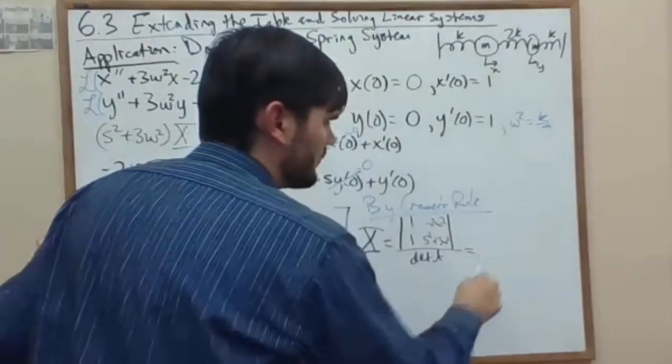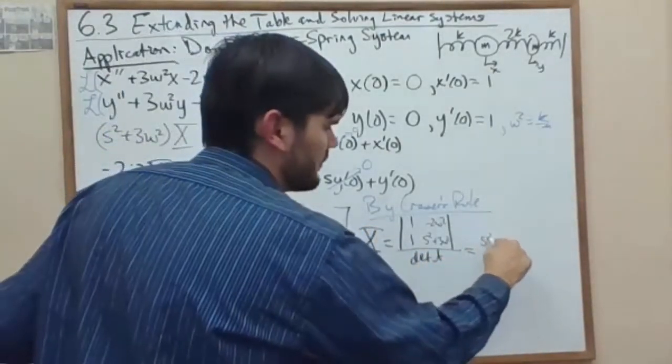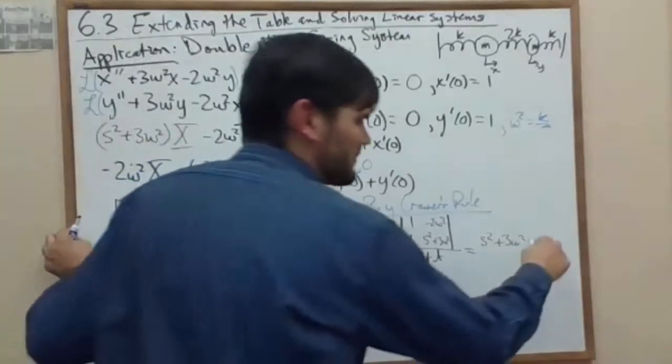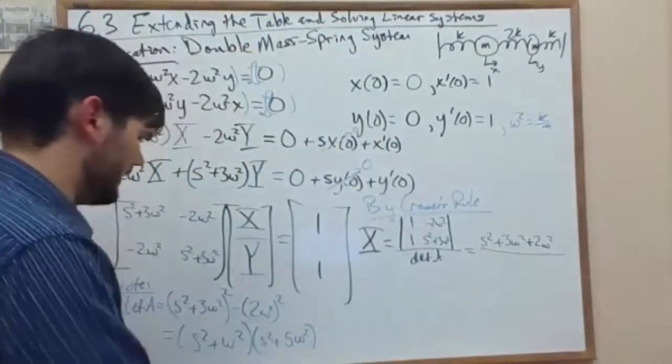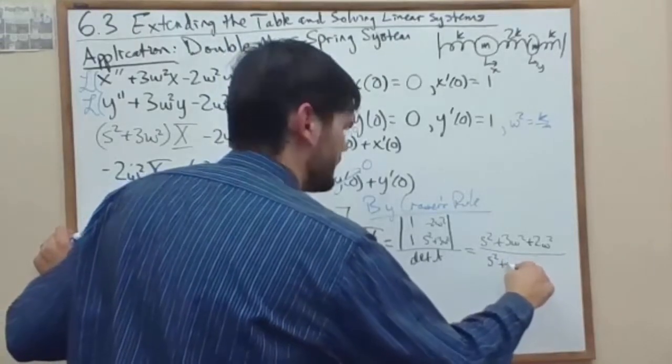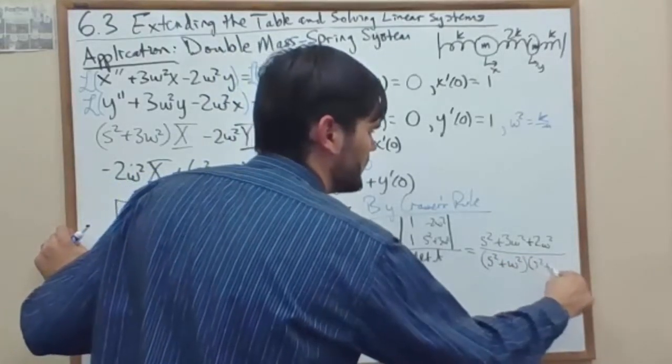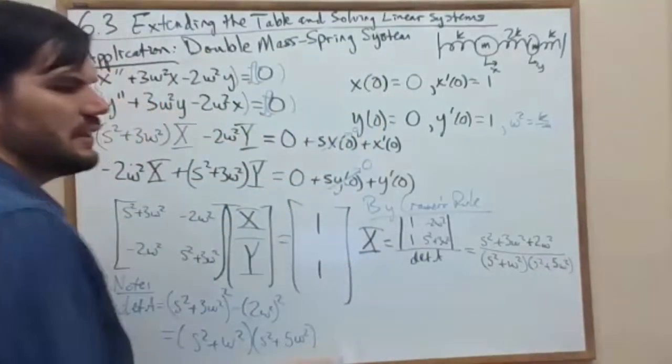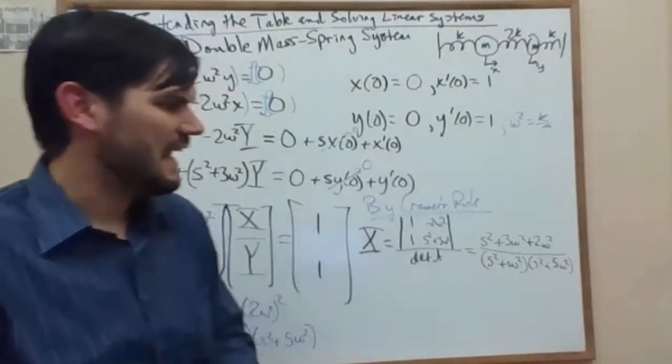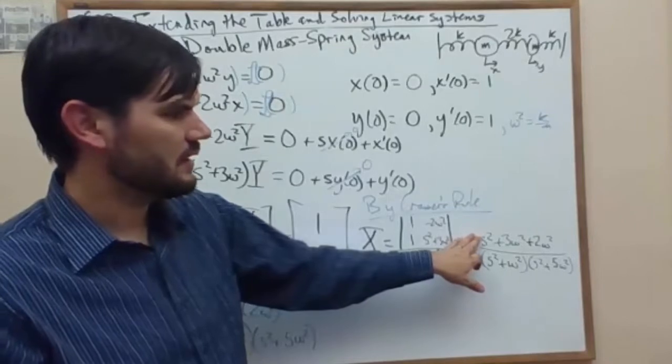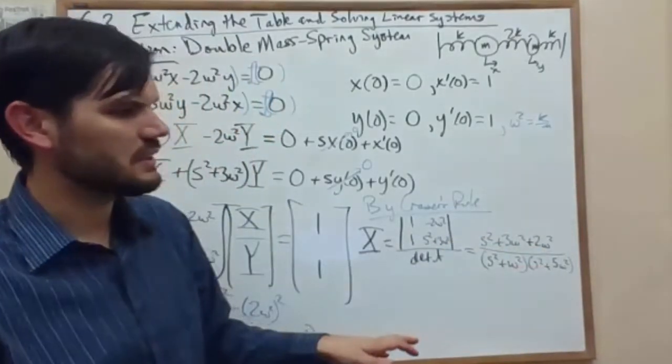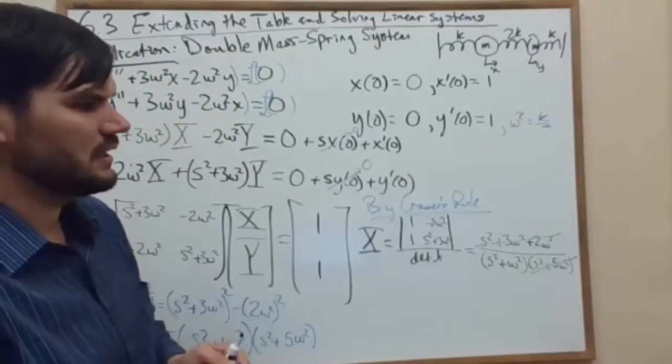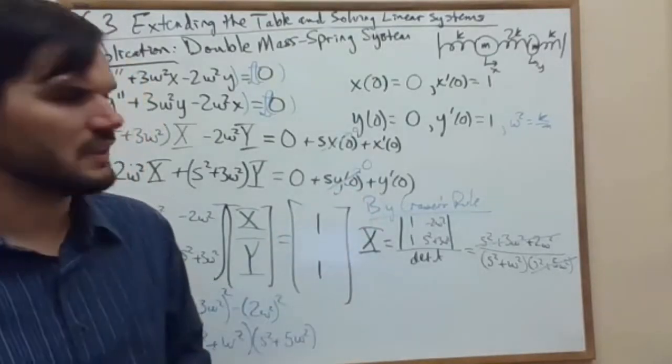So let's write that down. We'll get an s squared plus 3 omega squared minus a negative 2 omega squared plus 2 omega squared, all divided by s squared plus omega squared times s squared plus 5 omega squared. Now looking at these two pieces, we have an s squared plus 5 omega squared on top, which cancels directly with s squared plus 5 omega squared on the bottom, leaving us with just 1 over s squared plus omega squared.